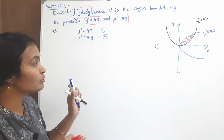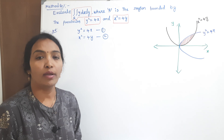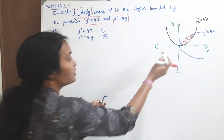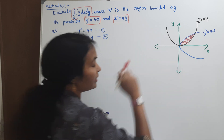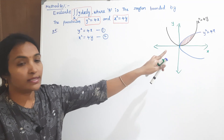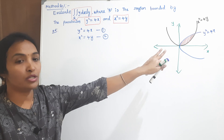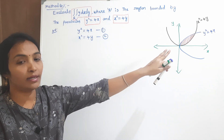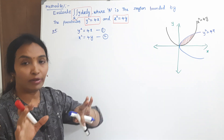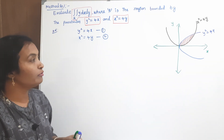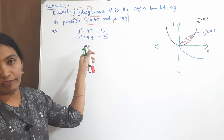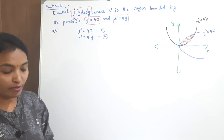Now we have to find the limits of x and y for the region — from here to here, this is our region. For getting the limits, we need to find the points of intersection. For finding the point of intersection, we need to solve these two equations. I will explain one by one.